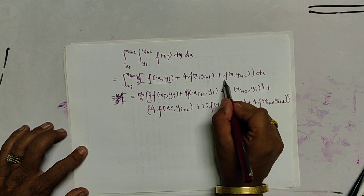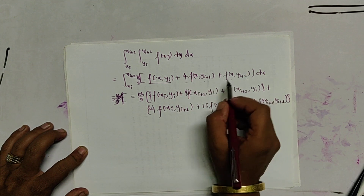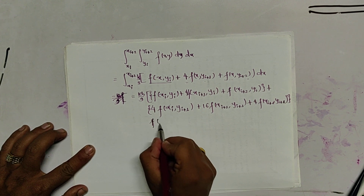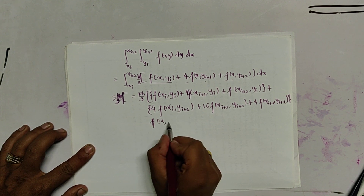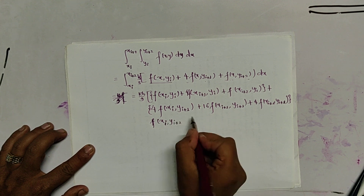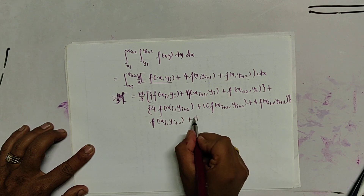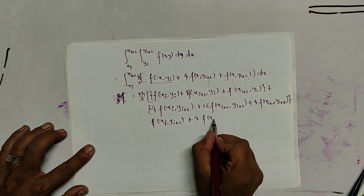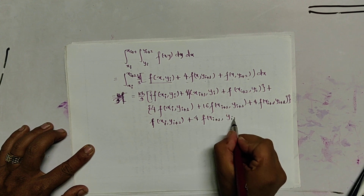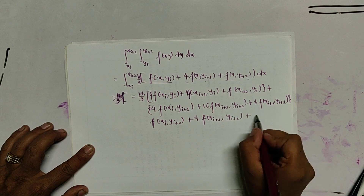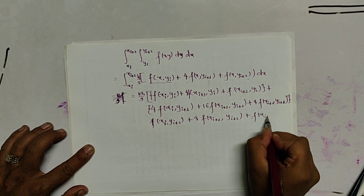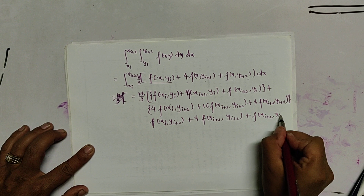Expanding the last row: f(x_i, y_{i+2}) + 4f(x_{i+1}, y_{i+2}) + f(x_{i+2}, y_{i+2}). This completes the full double Simpson's 1/3 rule formula.